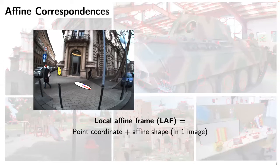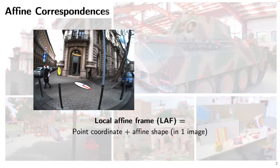Let's start with what is a local fine frame. This is the geometrical part of the local feature - a little bit more than a keypoint. You have keypoint x, y, scale, orientation, and elliptic shape. This was very popular in 2004 when SIFT came, along with Harris and similar methods. Then they went into oblivion, and we are trying to revive them because they are really cool.